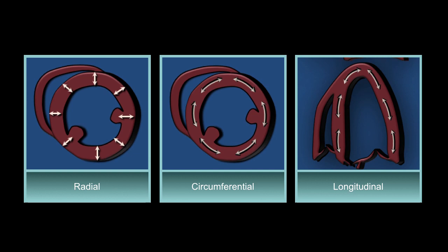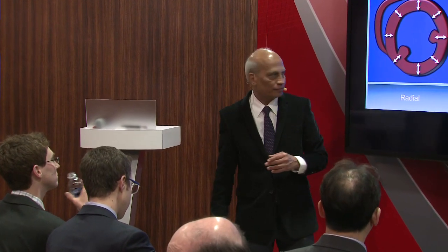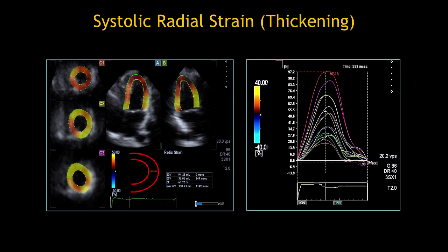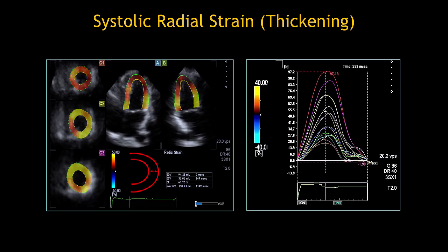One is called radial strain — strain is simply a change or deformation; radial refers to wall thickening from diastole to systole. Circumferential strain is segment shortening around the circumference. Longitudinal strain is extremely valuable, showing contraction or relaxation from base to apex; it reflects many things that go on in different layers. When we extract the data, there's a color code showing different segments both in short axis and longitudinal view — this is an example of radial strain, i.e., wall thickening.